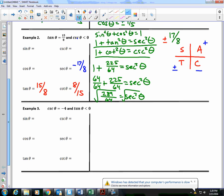So, secant is negative 17 over 8. How do I get cosine? Negative 8 over 17.